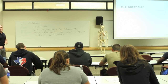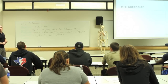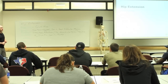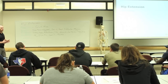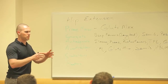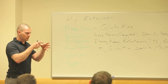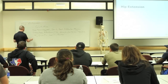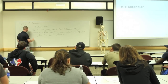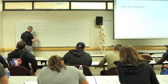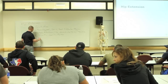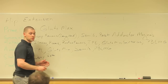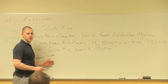Semimembranosus and semitendinosus — stabilizers. These are the ones that are close to the joint. The deep rotators of the hip — they are stabilizers of the hip.